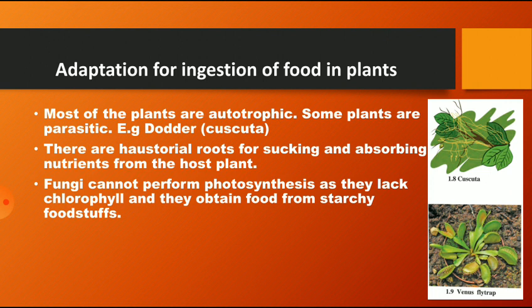Fungi cannot perform photosynthesis due to lack of chlorophyll, and they obtain food from decomposing matter. The mosquito plant and Venus flytrap are carnivorous plants, serving as examples of adaptations for the purpose of ingestion of food in plants.